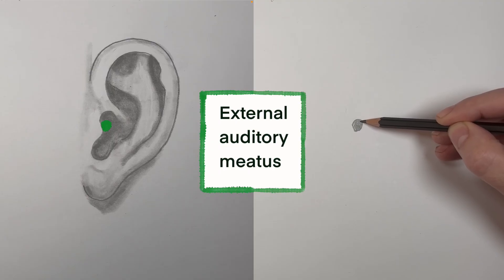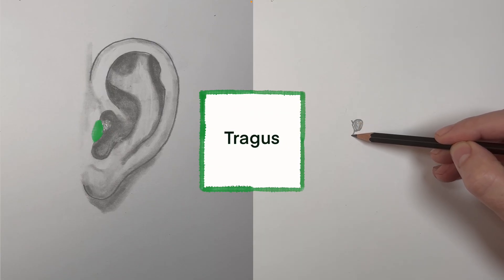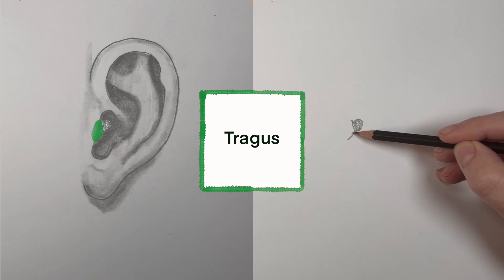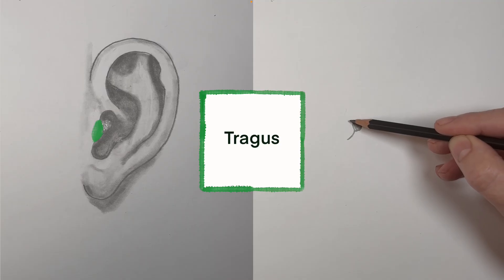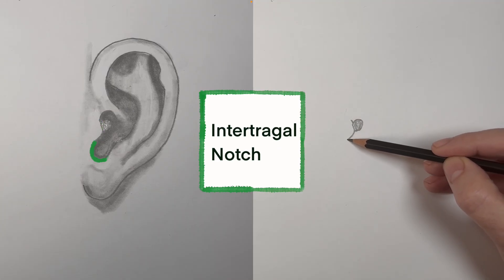This is the passage where sound goes into your head. Covering up most of the canal is a little bump called the tragus. Tragus is Greek, it means goat, and it perhaps refers to hair that grows in that area.